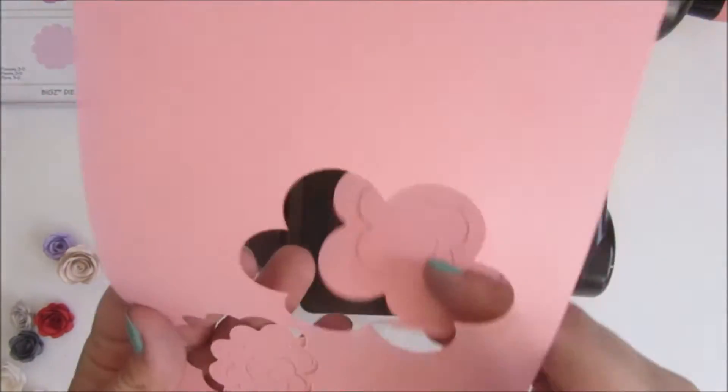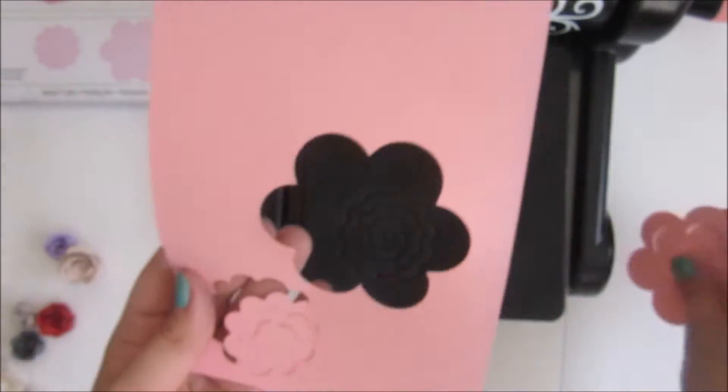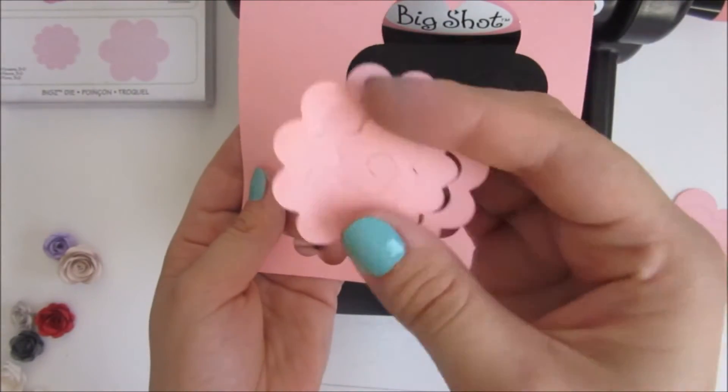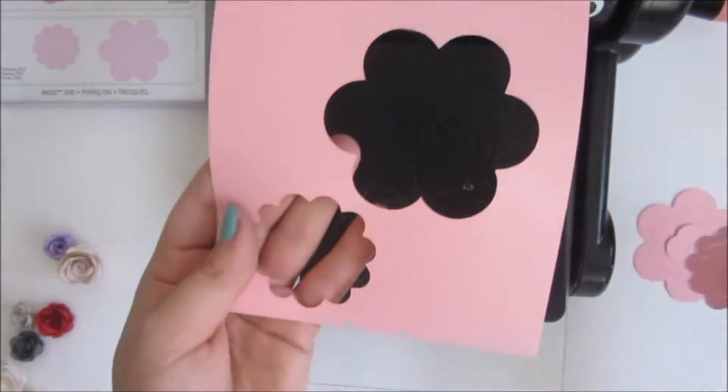As you can see, we have two shapes of flowers. The bigger one is for big flowers and the small one is for small flowers.